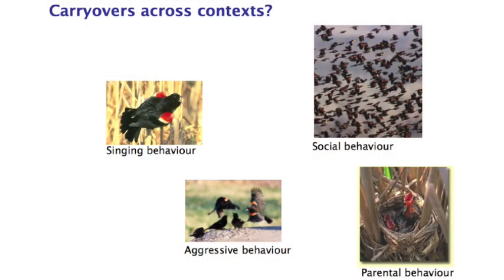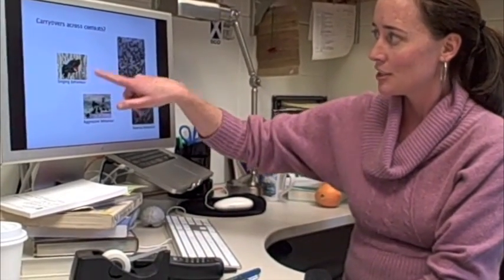When behaviors are correlated with each other, there are some really interesting implications. So this slide is meant to represent some of the things that a red-winged blackbird does during the course of its lifetime. We tend to think that how a male red-winged blackbird, for example, behaves while he's trying to attract mates, how he sings,